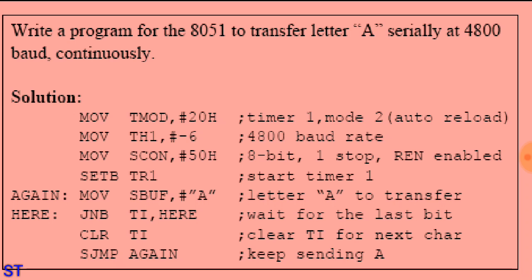MOV SBUF, #'A' loads the letter A into SBUF for serial transmission. The instruction JNB TI, here monitors the TI flag continuously until the letter A is fully transmitted. After transmission, CLR TI clears the TI bit back to zero, then the program jumps back to MOV SBUF, #'A' to load and send letter A again continuously until the program is stopped.